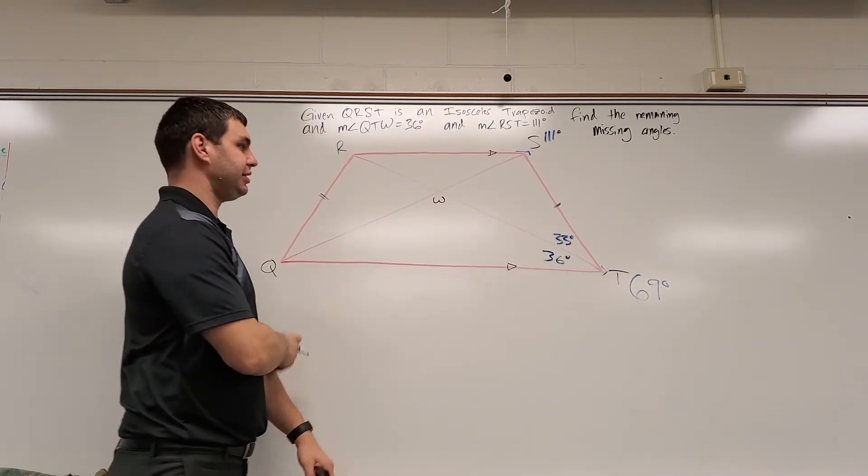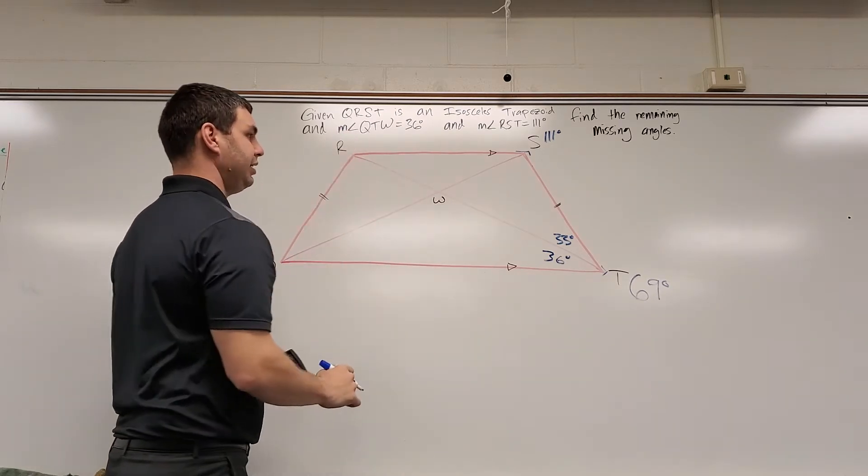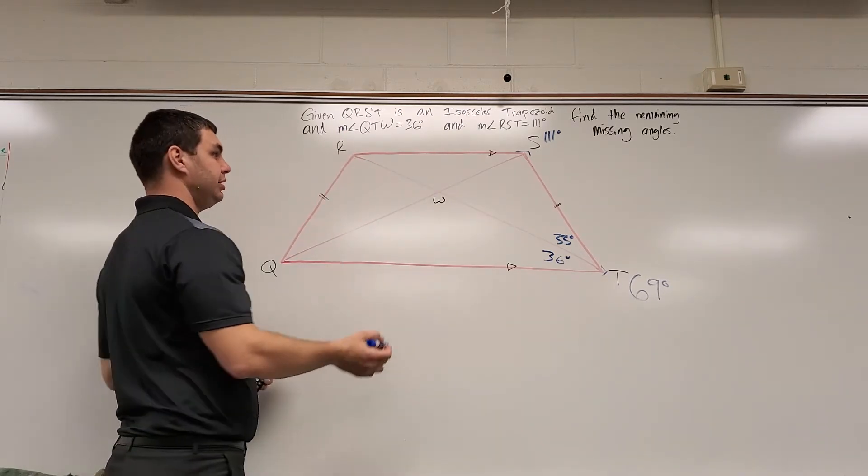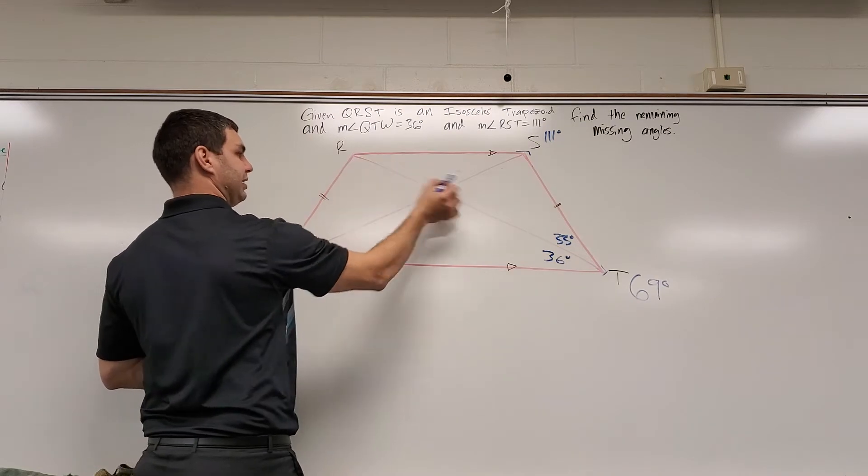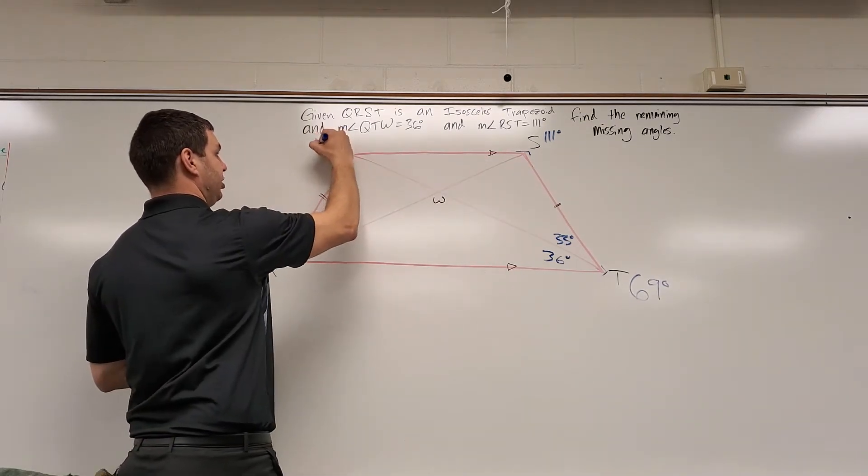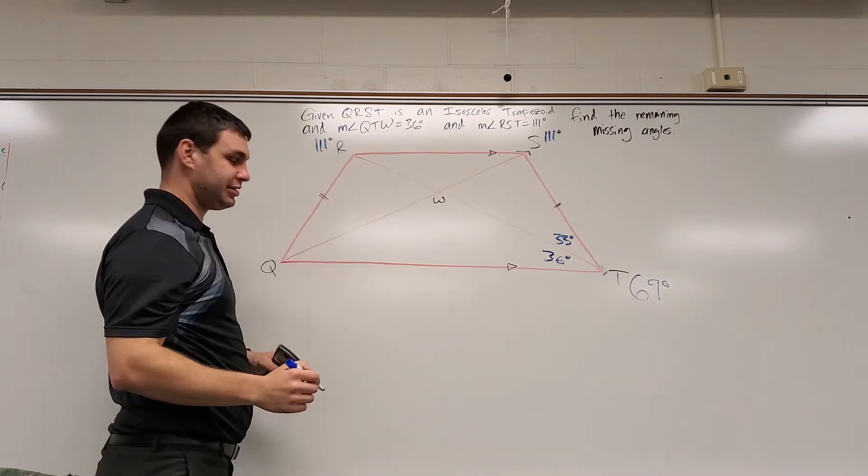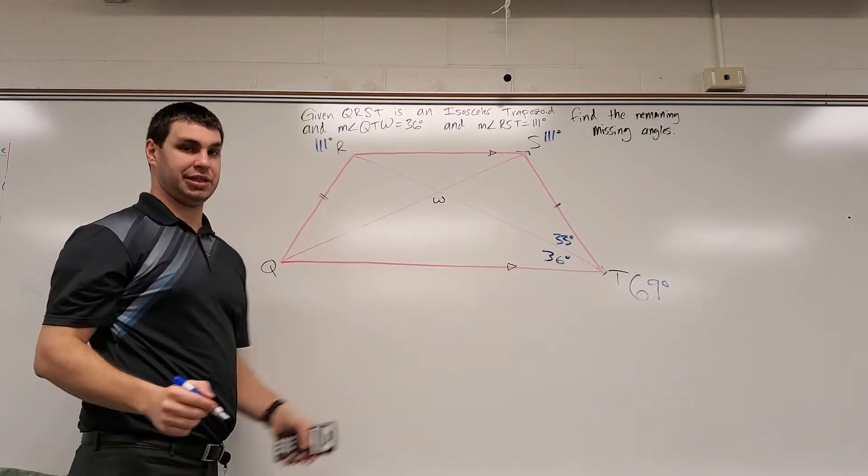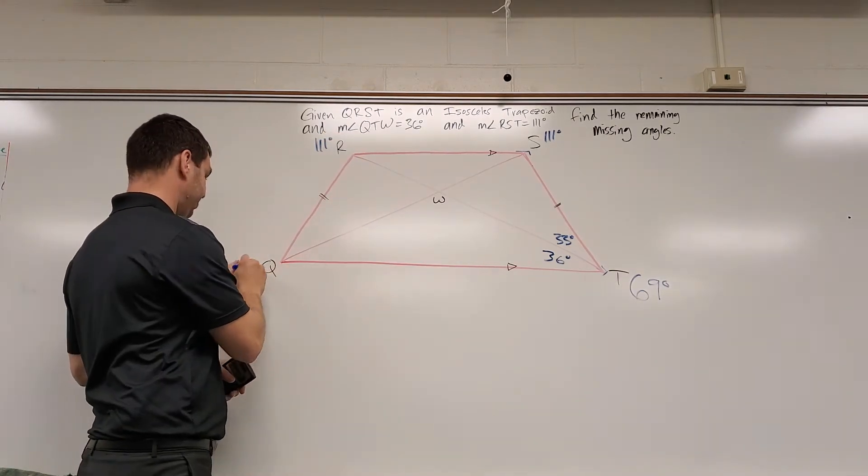The other thing this does for me is it tells me information about this side. An isosceles trapezoid, angle S and angle R, since those are base angles on this top base, those would be the same. So angle R is also 111 degrees. And down here, angle Q is the same as angle T, also 69 degrees.